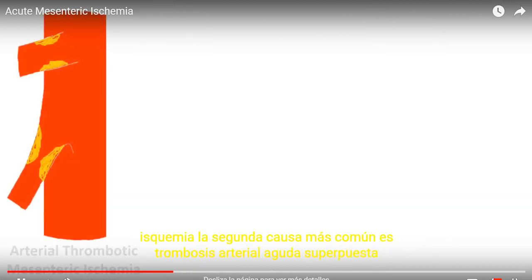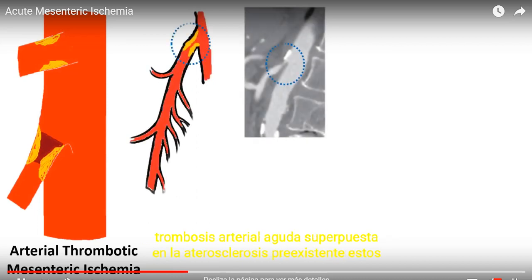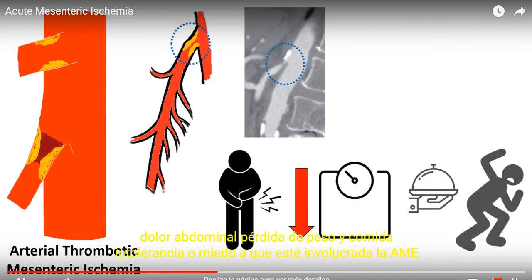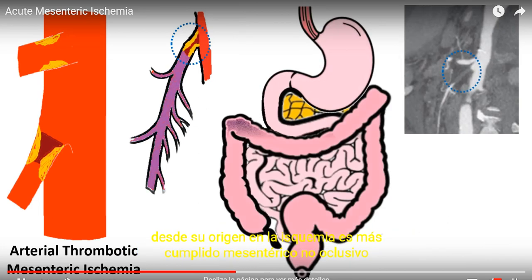The second most common cause is acute arterial thrombosis superimposed on pre-existing atherosclerotic disease. These patients are symptomatic of chronic mesenteric ischemia prior to the event, including a history of postprandial abdominal pain, weight loss, and food intolerance or fear. The SMA is involved from its origin, and ischemia is more confluent.